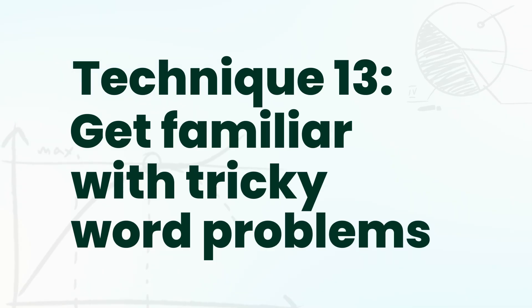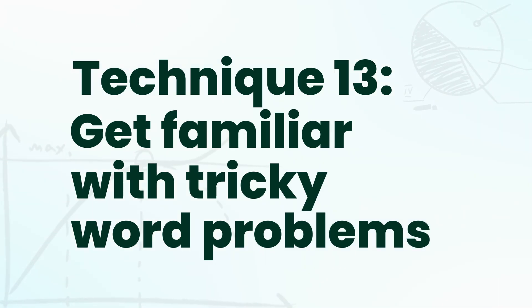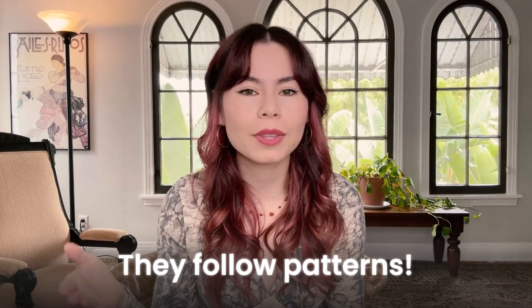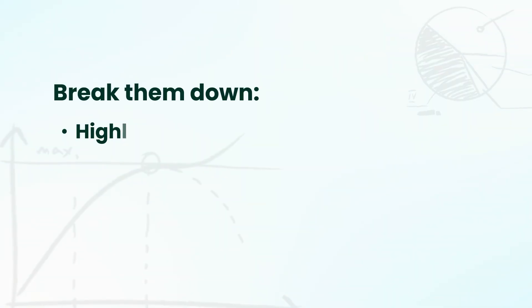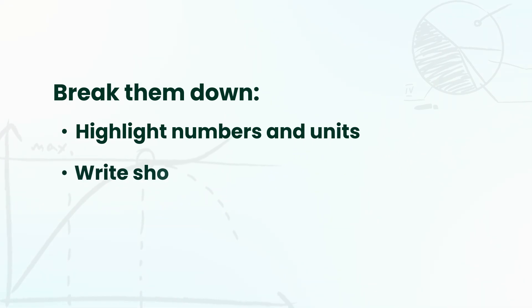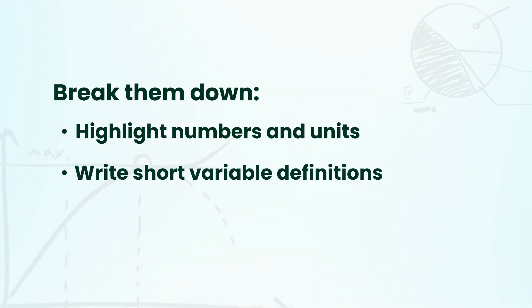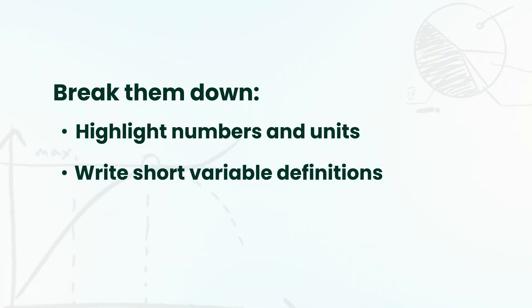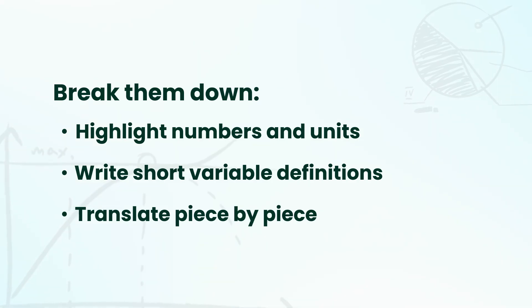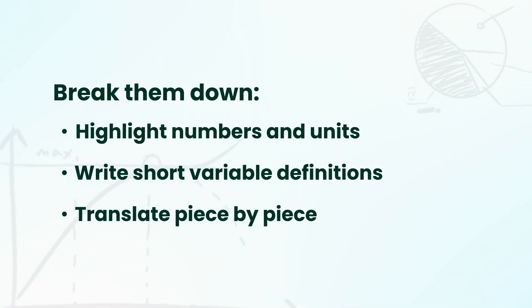Technique number thirteen: get familiar with tricky word problems. A lot of students get scared of word problems, but they often follow the same patterns. Highlight the numbers and the units, write short variable definitions like A equals 2B minus 6, and translate the problem piece by piece. Once you decode the setup, you're already halfway there and it becomes a lot easier to figure out what you need to do.